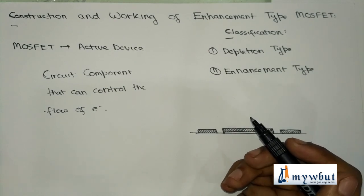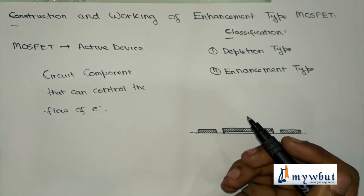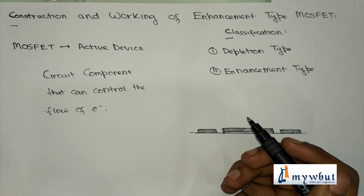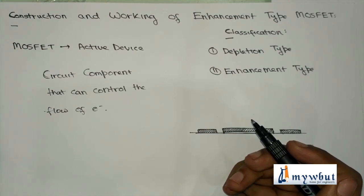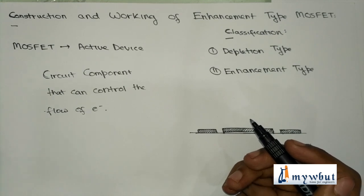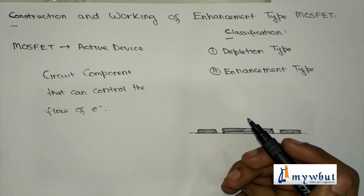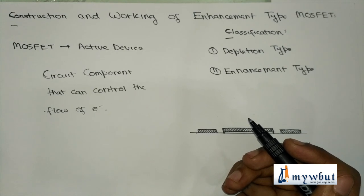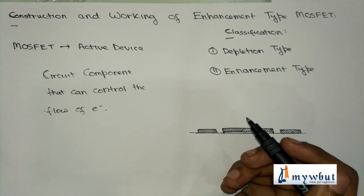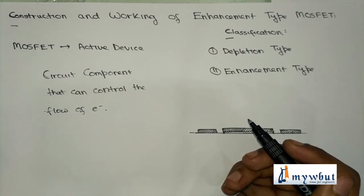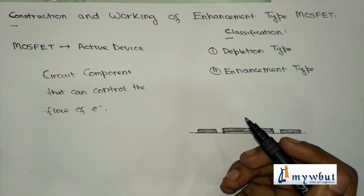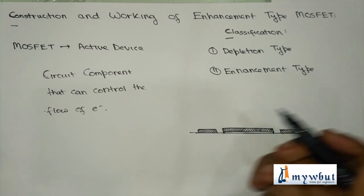Passive devices include resistors, capacitors, and inductors — these three are passive devices. While active devices are BJTs, transistors, MOSFETs, and JFETs. As they can control the flow of electrons, they are active devices.